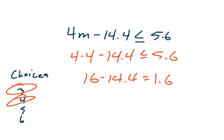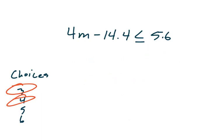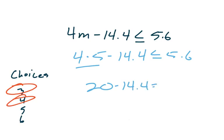Let's take a look at one more problem just to see what happens. What if we put 5 in here? So 4 times 5 is 20. So 20 minus 14.4 turns out to be equal to 5.6.